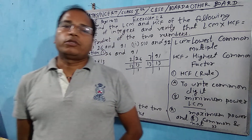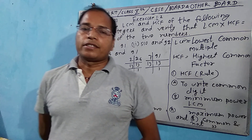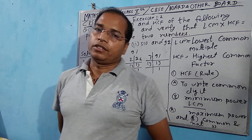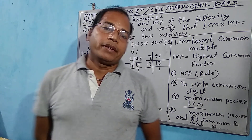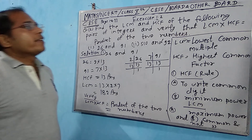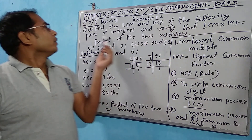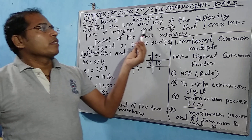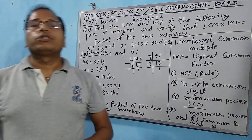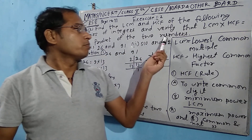Today we shall teach about prime factorization of Exercise 1.2 of Class 9th. Look at these questions: Find the LCM and HCF of the following pairs of integers and verify that LCM into HCF is equal to the product of the two numbers.